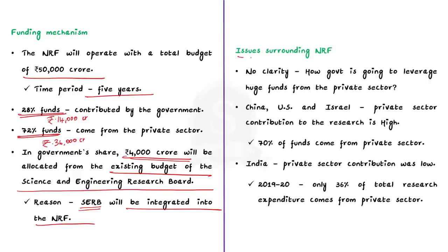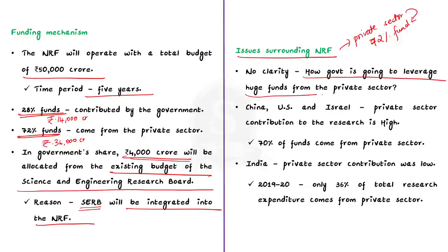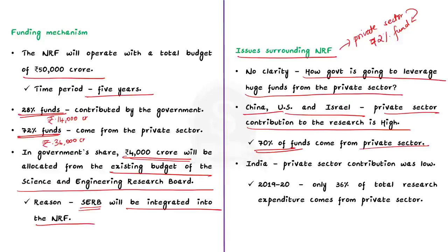The key issue surrounding the NRF is that there is no clarity on how the government will leverage such large funds from the private sector. In countries like China, the US and Israel, around 70% of research funds come from the private sector. But in India, private sector contribution was only about 36% of total research expenditure in 2019-20. Therefore, there is no clarity on how the government will attract more private money.